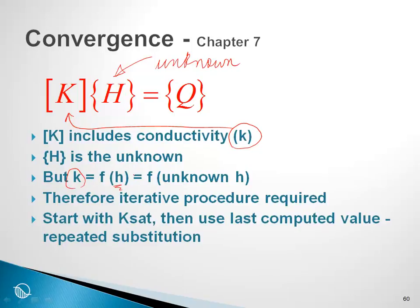As a result, we have the conductivity being a function of the very thing we want to compute. We are forced into an iterative procedure. So basically we start with the saturated conductivity and then use the last computed value in the next iteration. It is a form of repeated substitution.